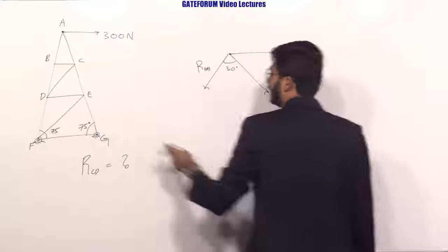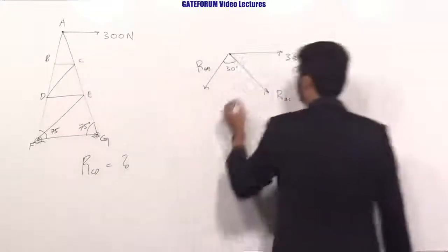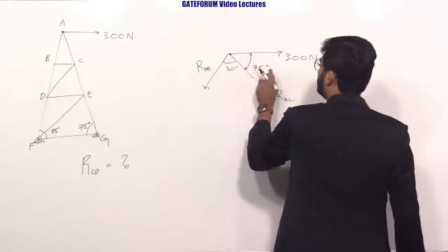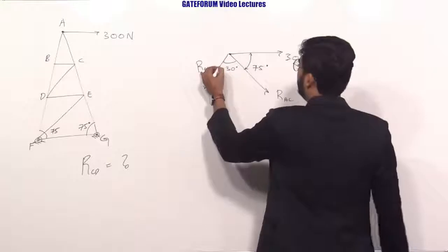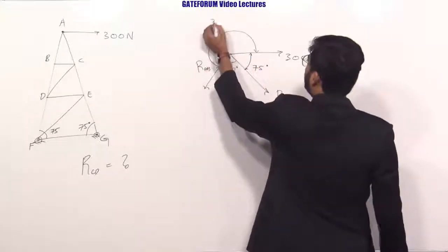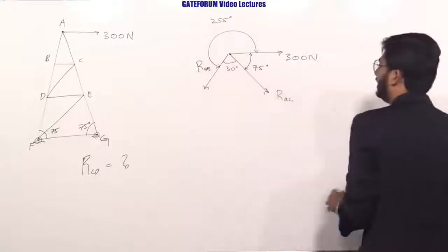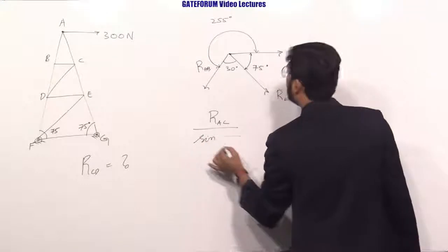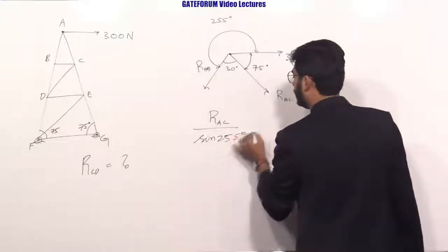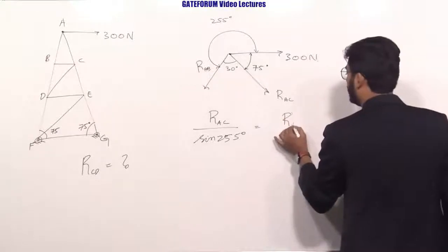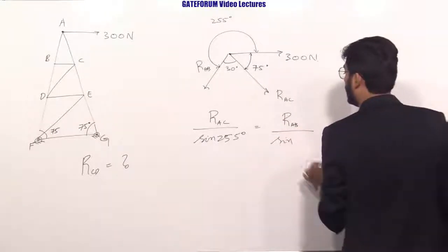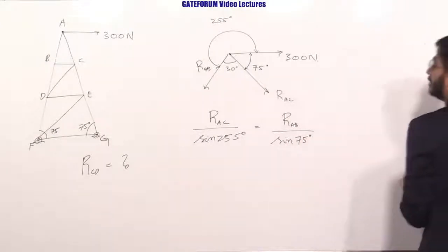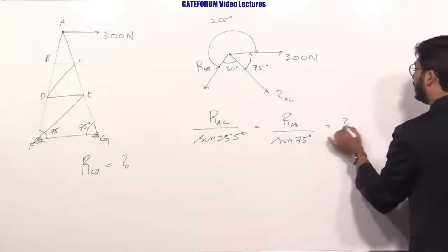The angle between RAB and RAC is 30 degrees. The angle here is 75 degrees, and by alternate angles it is also 75 degrees. So we have 30 + 75 = 105 degrees, and the remaining angle is 255 degrees. Applying Lamy's theorem: RAC / sin(255°) = RAB / sin(75°) = 300 / sin(30°).